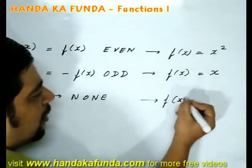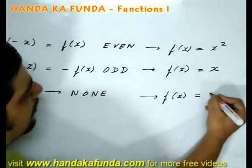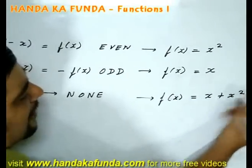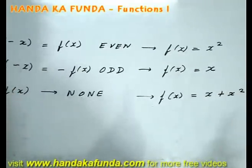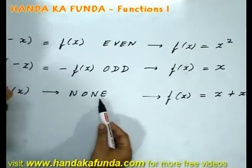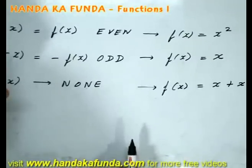If I want to look at a neither function, that would simply be x plus x squared. As you can see here, I have added an even function and an odd function, and the result is a neither odd nor even function.